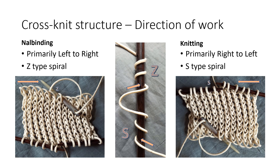For the cross-knit structure, the direction of work itself is not a definitive discriminator, but in combination with other factors is at least indicative. Knitting is primarily worked by forming new stitches on the right-hand needle working to the left, and knoll binding primarily left to right. In this way, knoll binding is more similar to basketry and netting. There are exceptions: left-handed workers being one possibility, working from the technical back of the fabric another. Knoll binding can also be worked in a netting fashion from the top to the bottom and left to right, which when read from bottom to top appears to be a right-to-left spiral.